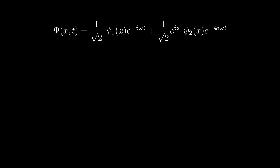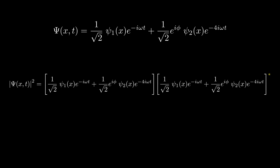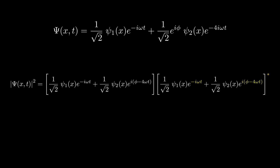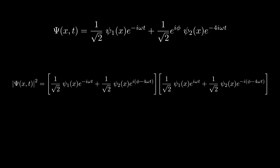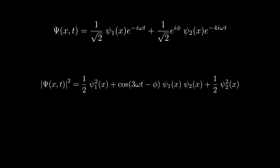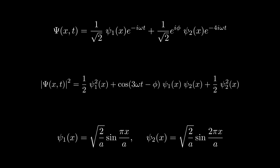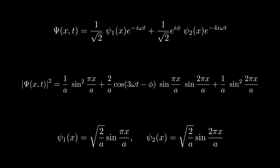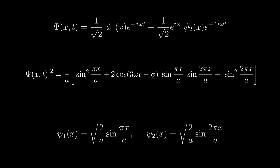Now that we have expressed the solution in terms of eigenstates, let's compute its squared modulus, which represents the probability density. This means we take ψ(x, t) and multiply it by its complex conjugate. We substitute the expression for ψ(x, t) into this equation. The complex conjugate only affects the exponential terms, flipping the signs of the exponents. We then simplify the middle term, recognizing it as the definition of the cosine function. Substituting the explicit forms of ψ₁(x) and ψ₂(x), we've fully determined |ψ(x, t)|², which tells us how the probability density evolves over time.